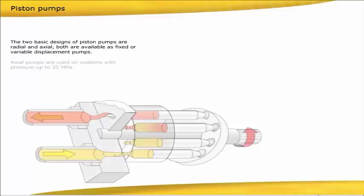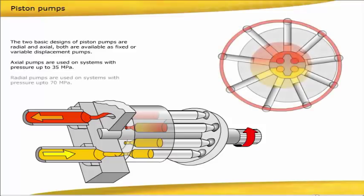The two basic designs of piston pumps are radial and axial. Both are available as fixed or variable displacement pumps. Axial pumps are used on systems with pressure up to 35 megapascals. Radial pumps are used on systems with pressure up to 70 megapascals.